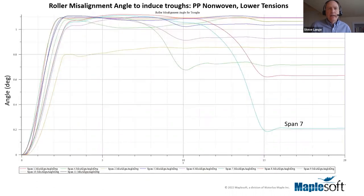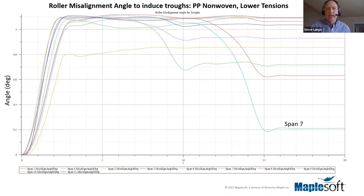When we lower the tensions in the polypropylene non-woven case, a few spans — particularly span seven — drop into the 0.2-degree misalignment range. So lowering tension made at least one span more sensitive to misalignment, all because of different span lengths and tensions in these different spans. It's not a singular value; it can change with different conditions, and that's the kind of thing you can explore with this simulation.